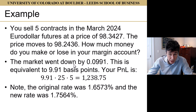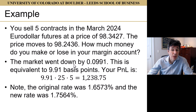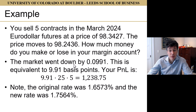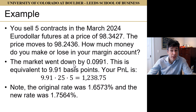Just so we can keep practicing this: the original rate when we entered the contract was 1.6573%, and the new rate was 1.7564%. The original rate, 1.6573%, is a rate that goes for 90 days starting in March of 2024 and effectively going until about June of 2024. So when we're trading these contracts, we're trading on our expectation — or the market's expectation — of the three-month or 90-day rates starting when the contract expires.